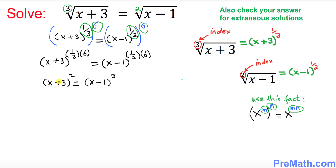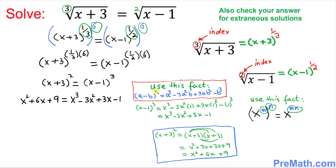Now we want to take care of this square and this cube. The left hand side, x plus 3 squared, expands to x squared plus 6x plus 9. The right hand side, x minus 1 cubed, expands to x cubed minus 3x squared plus 3x minus 1, using the standard cube expansion formula.